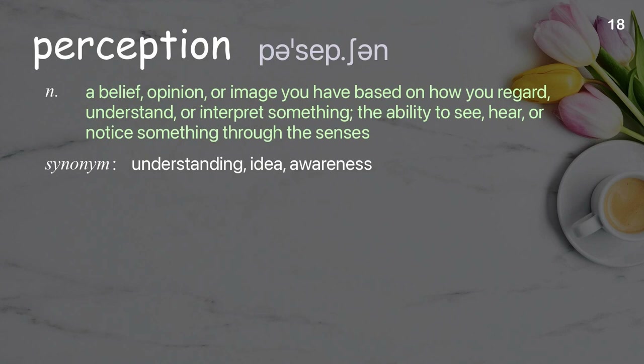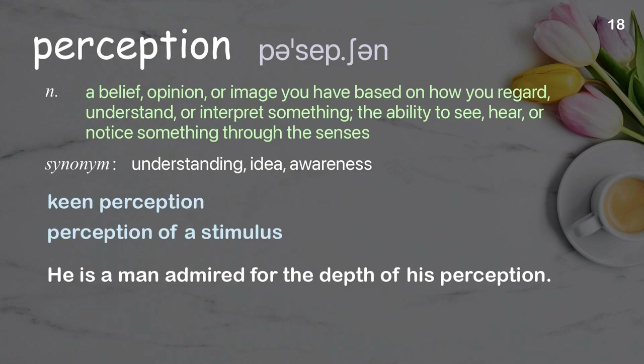Perception: a belief, opinion, or image you have based on how you regard, understand, or interpret something; the ability to see, hear, or notice something through the senses. Examples: Keen perception. Perception of a stimulus. He is a man admired for the depth of his perception.